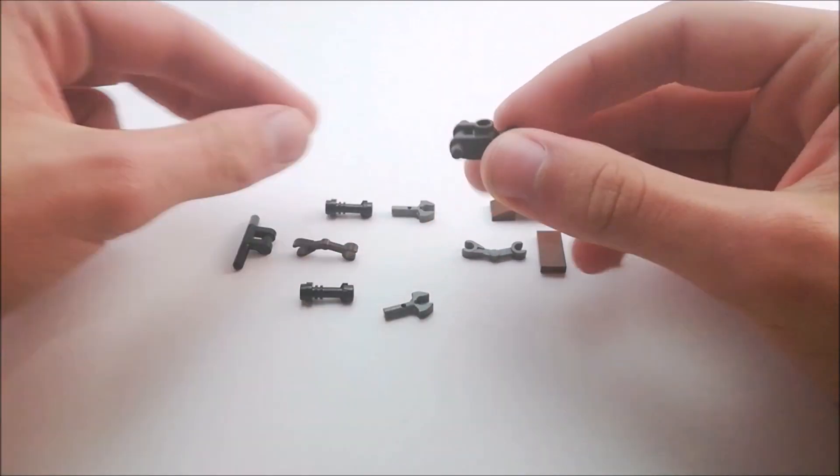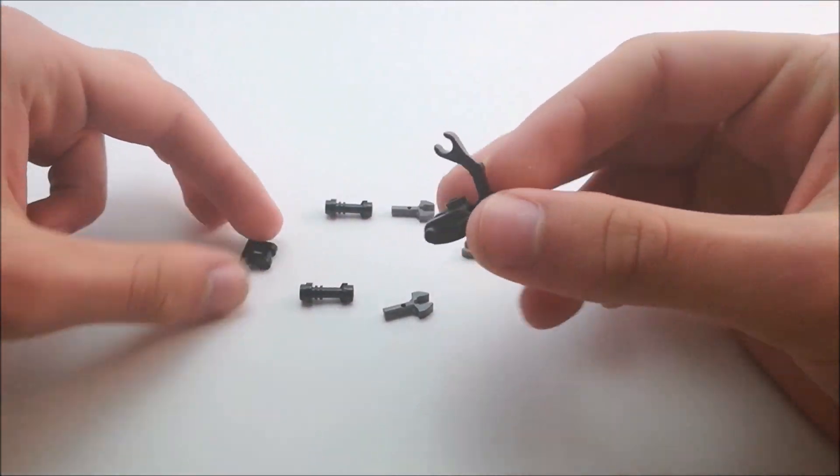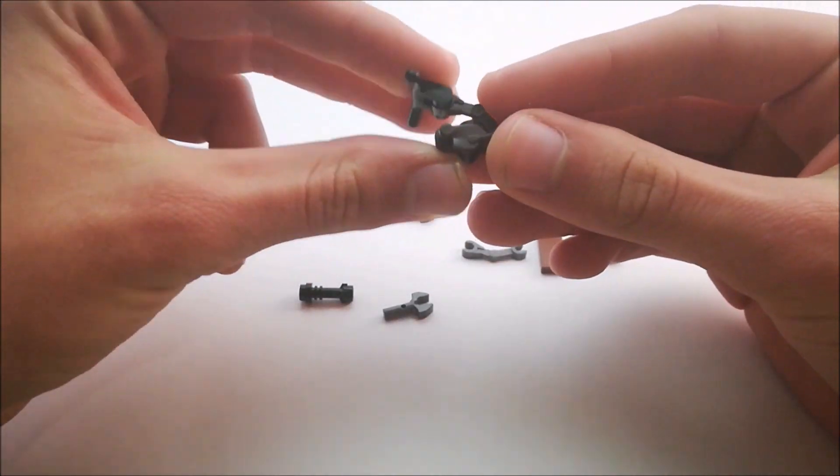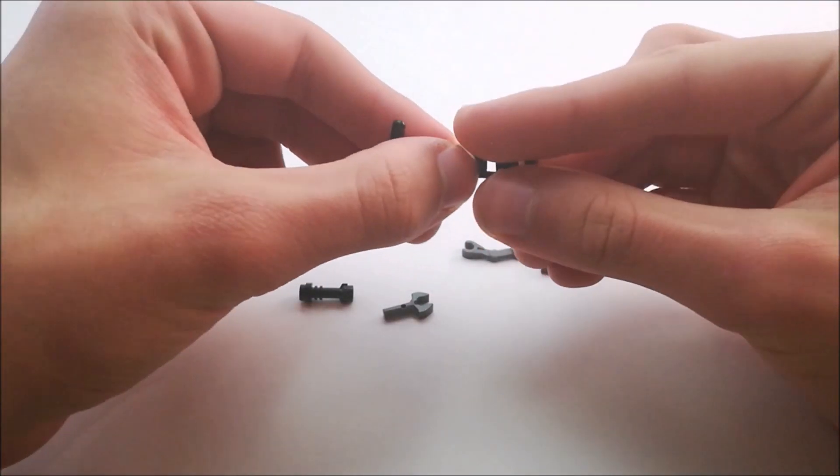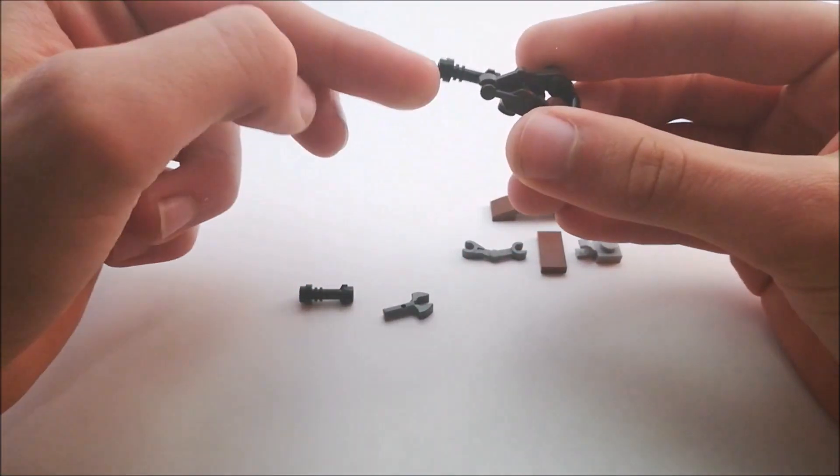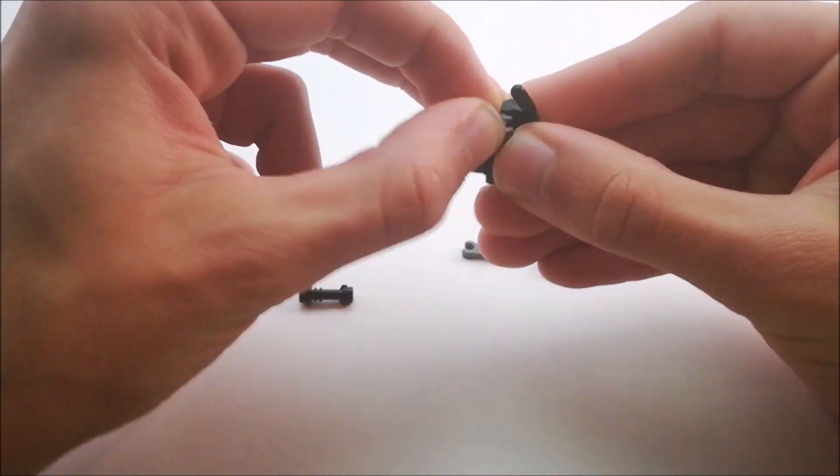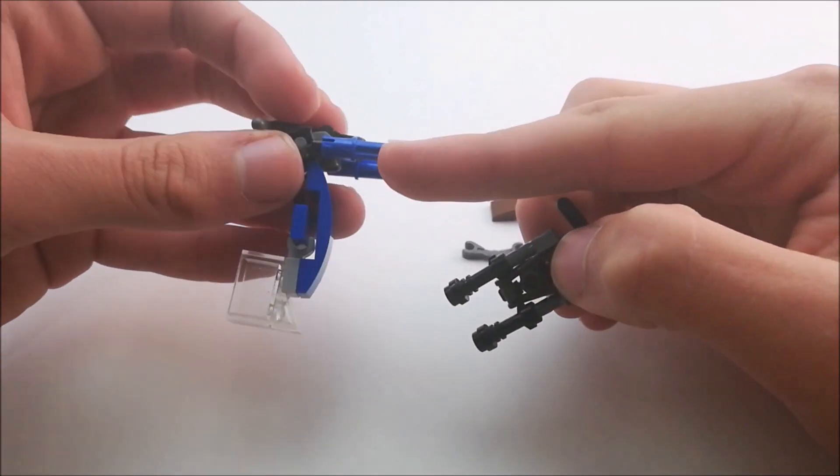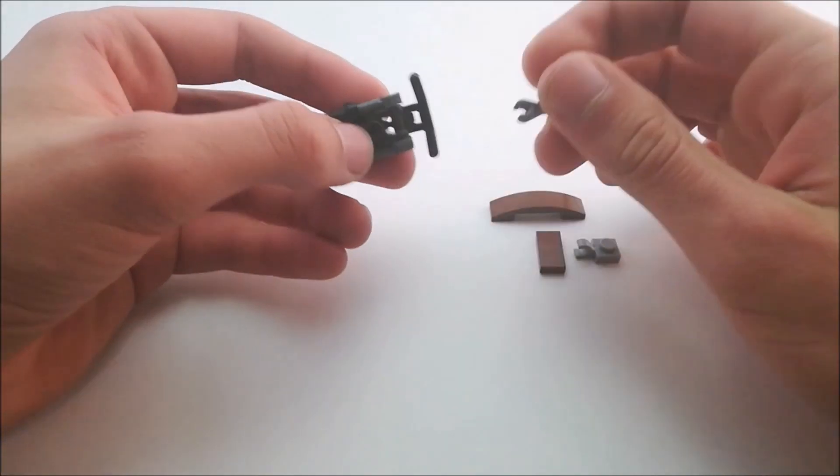First we're going to start off with a droid torso, a droid arm, and handlebars. You'll see you need to put the stud on the bottom. Next we need two of these little arms and lightsaber handles, any colors that you want of course, or you can use those pins on the blue version.